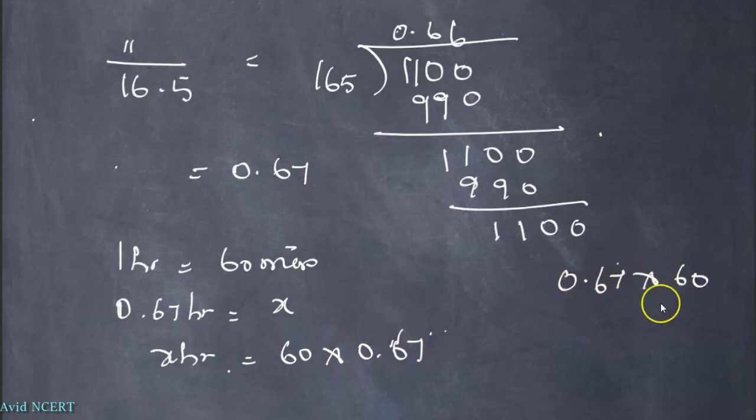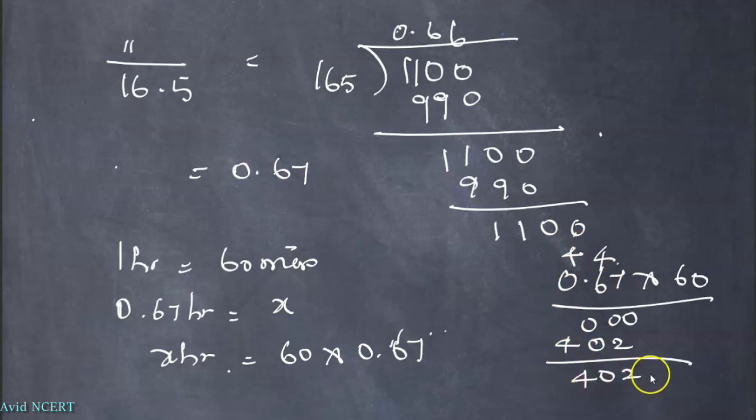When 0.67 is multiplied by 60: 7 times 6 is 42, 6 times 6 is 36 plus 4 is 40, 0 times 6 is 0 plus 4 is 4, so which is 402. Since there are two decimal places, the decimal point is before two digits, which is 40.